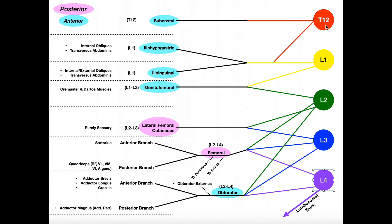Looking at the T12 nerve root: technically it is not part of the lumbar plexus, but it does have a small contribution to the first two nerves. The ventral ramus of T12 forms what we call the subcostal nerve, which plays a role in innervating some of the abdominal muscles — we'll cover that in a future playlist. So the subcostal nerve is simply the ventral ramus of T12.